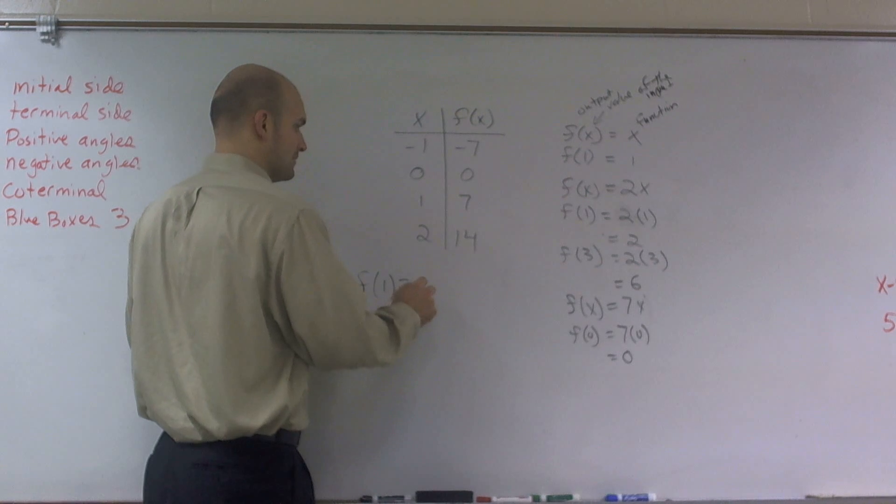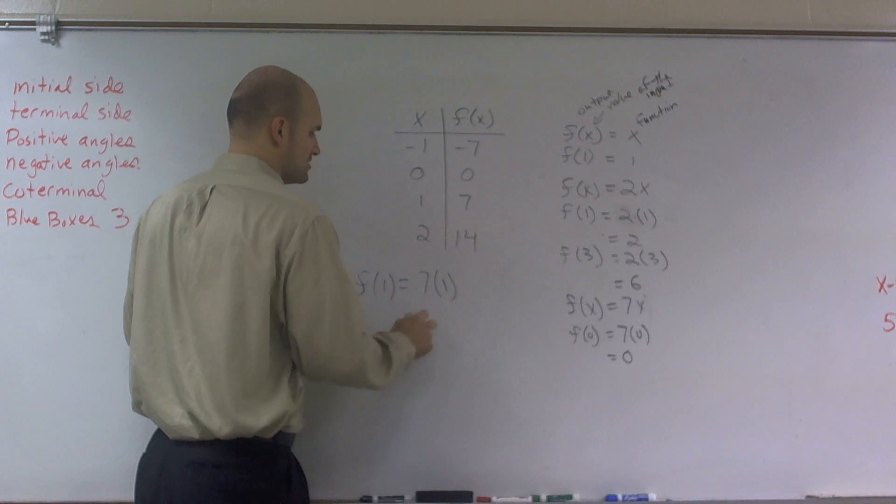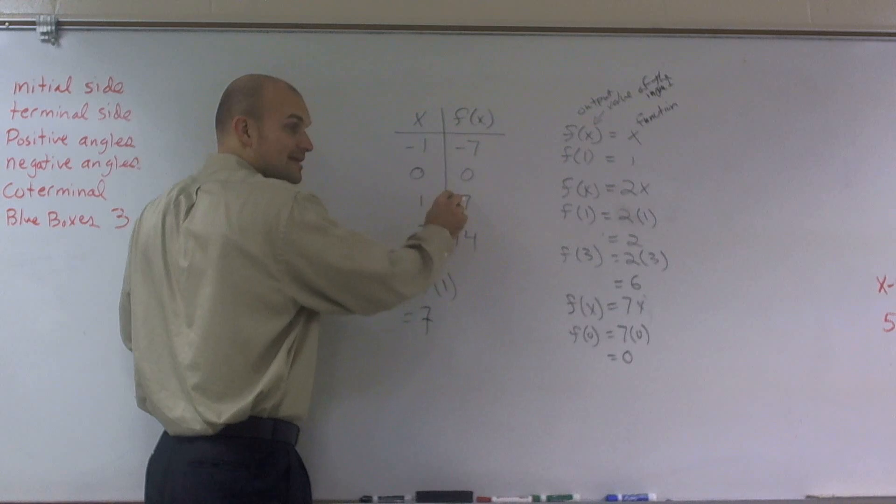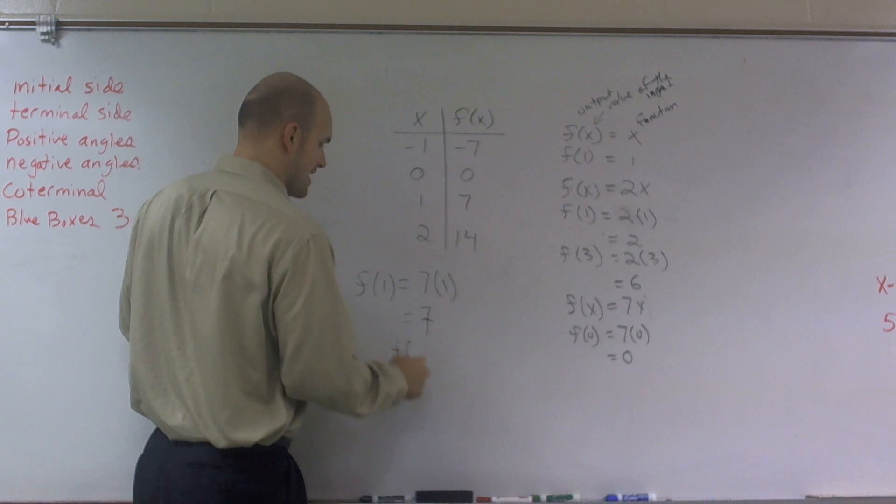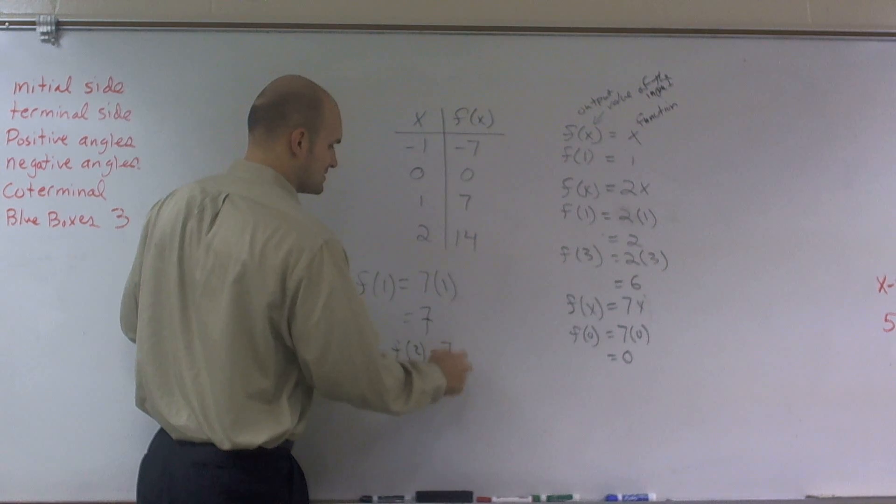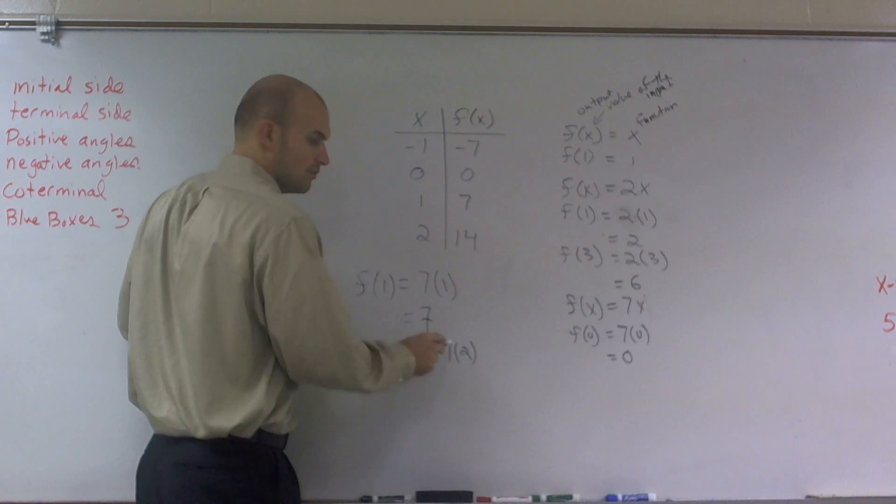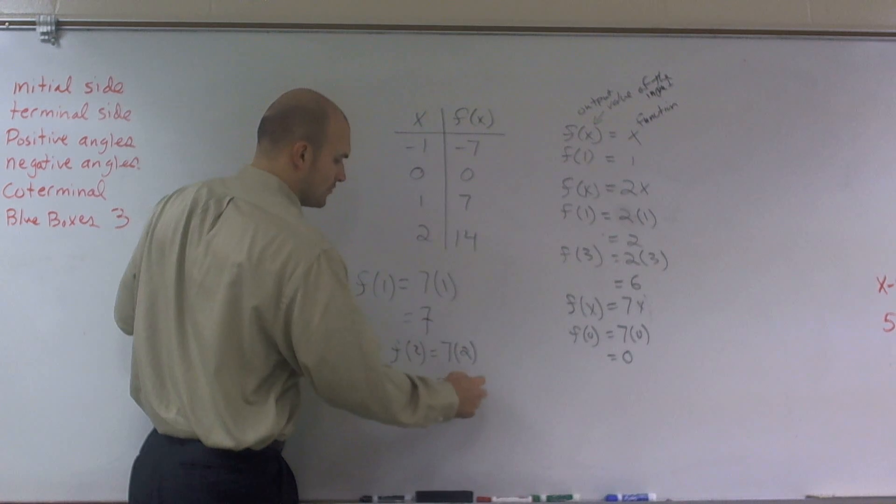f of 1 equals 7 times 1, which equals 7, which again is my output. And if I try f of 2, I get 7 times 2. Well, 7 times 2 is 14, which again is my output.